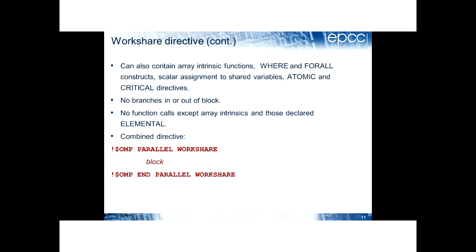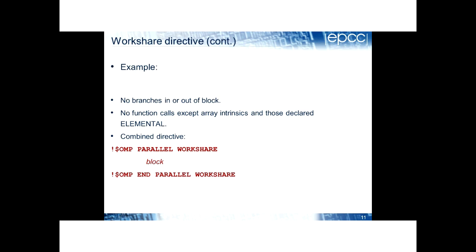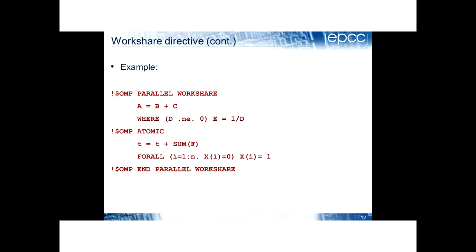There is a synchronization point at the end of the workshare, so it is like other work-sharing directives — there is an implied barrier. You can also have array intrinsic functions, where/forall constructs, scalar assignments, and atomic and critical directives inside the workshare block. You can't branch in or out, and the only function calls allowed are array intrinsics and functions declared as elemental. There is a shorthand combined OMP PARALLEL WORKSHARE directive.